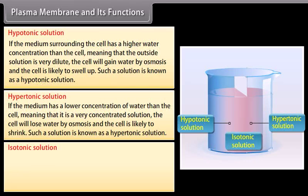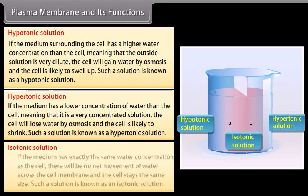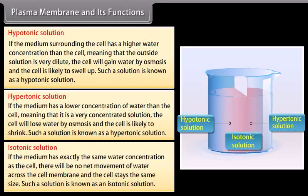Isotonic solution: If the medium has exactly the same water concentration as the cell, there will be no net movement of water across the cell membrane and the cell stays the same size. Such a solution is known as an isotonic solution.